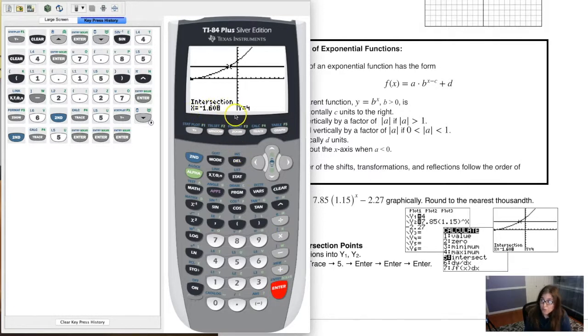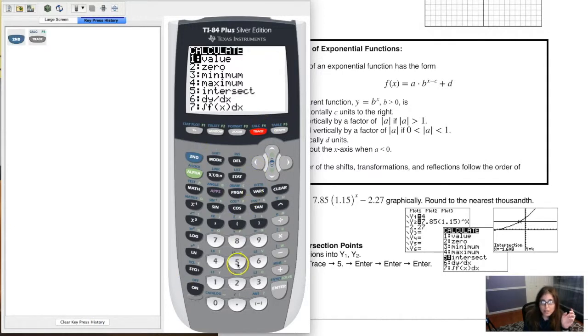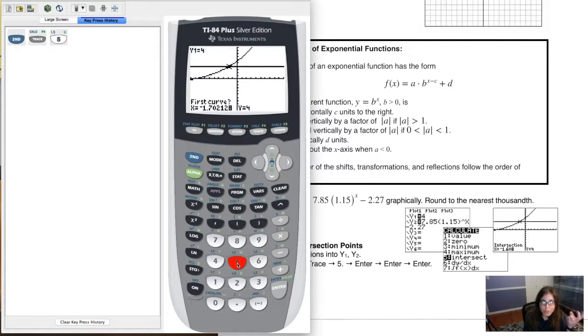I had guessed negative two, so I was a little bit off, but negative 1.608 seems reasonable. So just let me clear this out. And let me just run through this again. I would hit second, trace, option five. And when you only have the two curves in there, you can hit enter, enter, enter. And there it is.